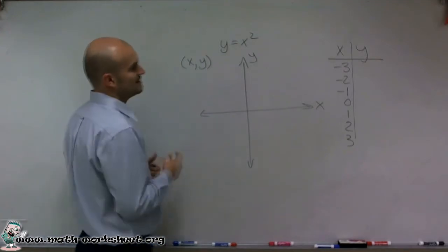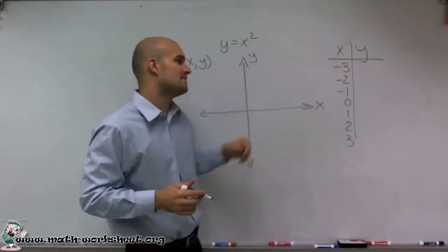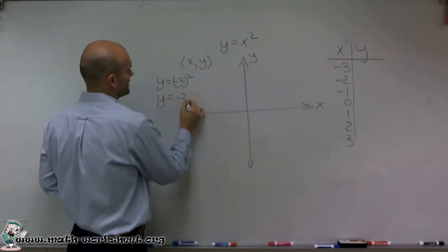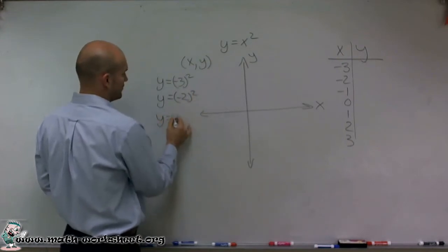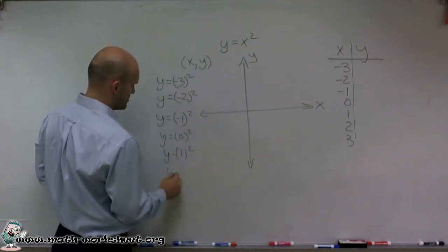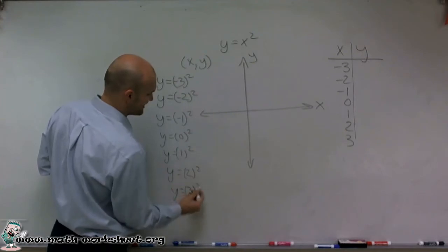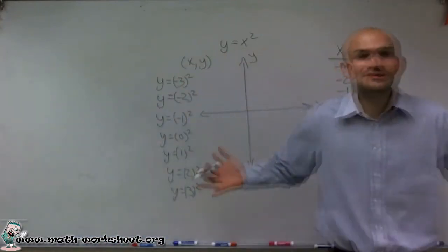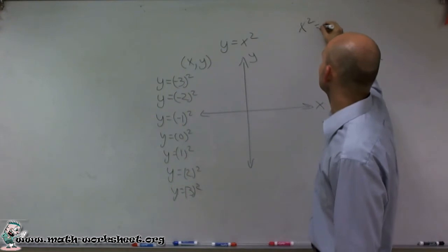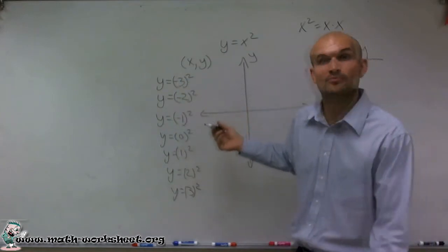To find the y-coordinate for each one of these, you're just going to plug in your x value into the equation for x and then find y. So we have y equals negative 3 squared, y equals negative 2 squared, y equals negative 1 squared, y equals 0 squared, y equals 1 squared, y equals 2 squared, and y equals 3 squared. The squared means x multiplied by itself — x times x. So negative 3 squared means negative 3 times negative 3, which equals positive 9.